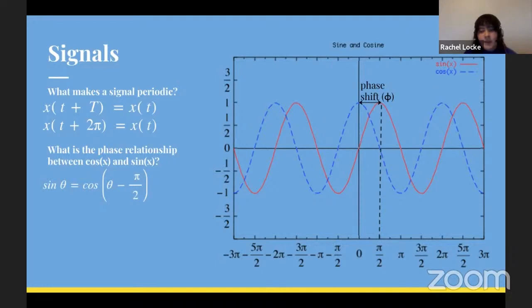And if you move a signal to the left, that's called an advance. So in this case we've moved the signal to the right, or the sine is shifted to the right of the cosine. So we can call it a delay, that's why it's minus π/2. If we want to express the phase shift in terms of sine, we could say that cosine is equal to sine plus π/2.